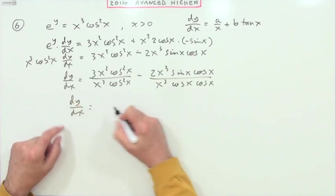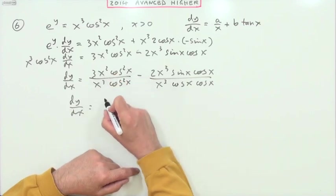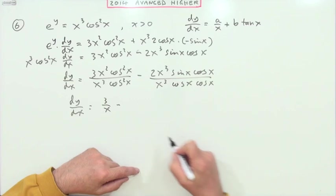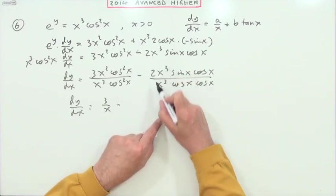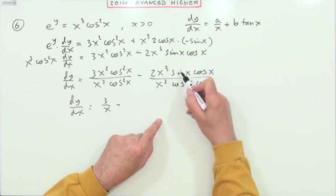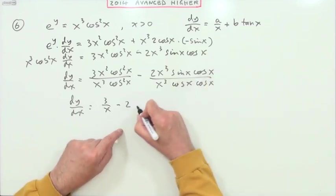That all of that cancels out apart from a 3 on top and an x underneath. The x is cancelled out and left with a 2. The cos is cancelled and sin over cos is tan, so it's minus 2 tan x.